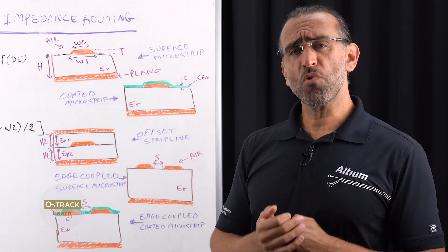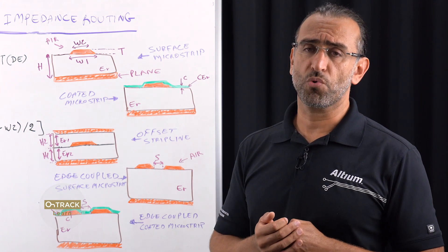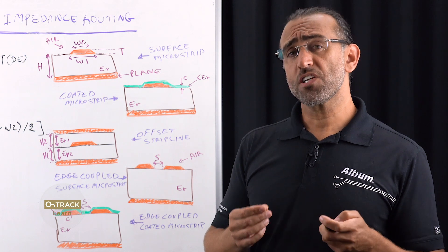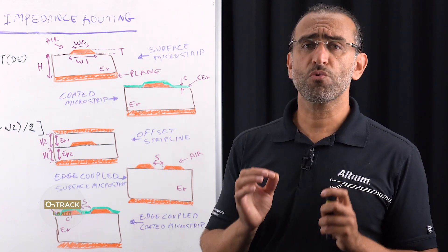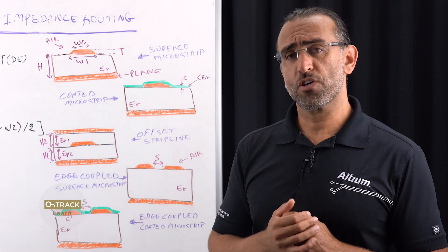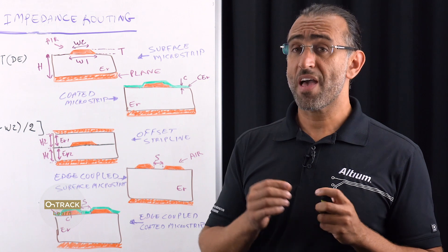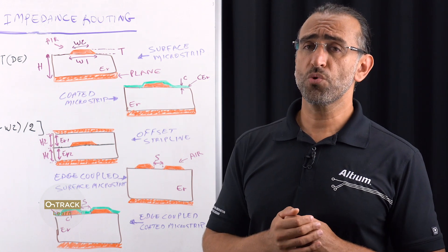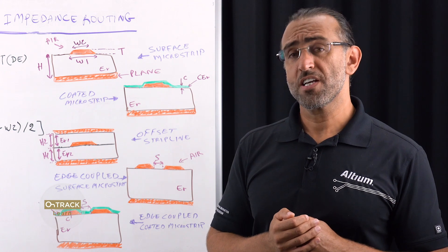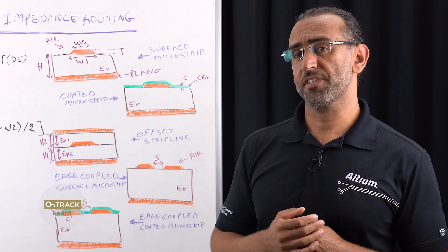With more boards carrying high-speed signals, more traces are requiring impedance control. This control needs to be accurate, and it's best if it can be achieved with a solver that precisely represents the properties of your actual layer stack, including accurate material properties. While it's a good start to have an integrated solver within your tool, it's still good to communicate with your fabricator to ensure they have the capabilities to meet your design-specific requirements.